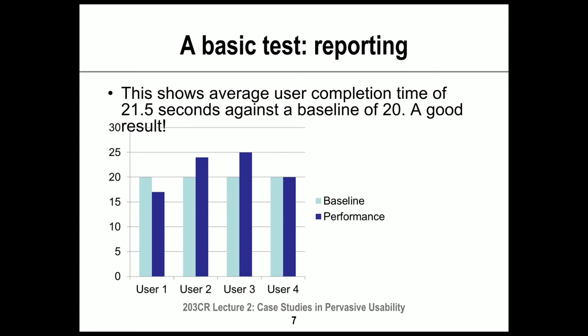If the average completion time for 10 people is around 21 seconds and our baseline is 20, that's a really good result. We can say that technology is usable on that task because what we measured in user performance is similar to what we were aiming for. If the average was 40 seconds against a baseline of 20, we'd have to say the usability doesn't seem good for this task, and we'd look at the interface design to think about what might need to change.